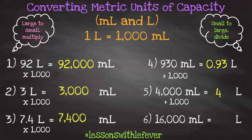And lastly, number six: 16,000 milliliters is equivalent to how many liters? Again, I'm going from a smaller unit to a larger unit, so I need to divide by 1,000. If we just cancel out those three zeros at the end of both numbers, that gives us 16 divided by 1, and 16 divided by 1 is 16 liters.